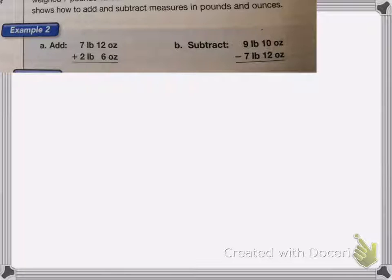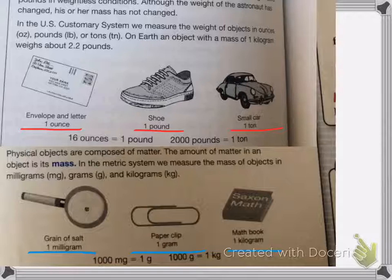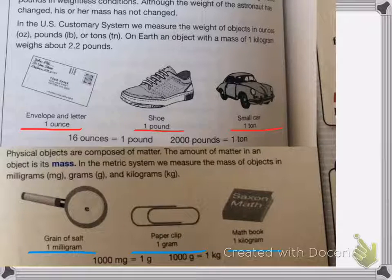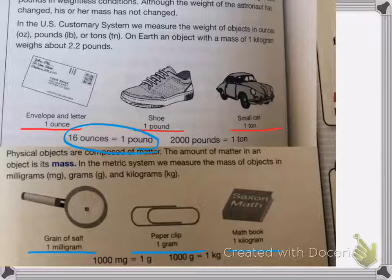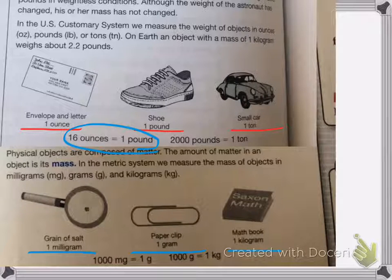So next we have some addition and subtraction problems. Now we're dealing with pounds and ounces, and if you remember, 16 ounces is equal to one pound, which is going to affect how I add and subtract these numbers.